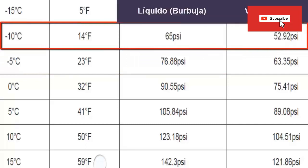For example, to achieve a temperature at the inlet of the evaporator of minus 10 degrees Celsius, an absolute pressure of 65 psi must be at the low side. On the other hand, if it requires minus 10 degrees at the evaporator outlet, then it must work with an absolute low pressure of 52.92 psi. Remember these table values — subtracting your local atmospheric pressure; you can use 14.7 psi for a quick calculation.